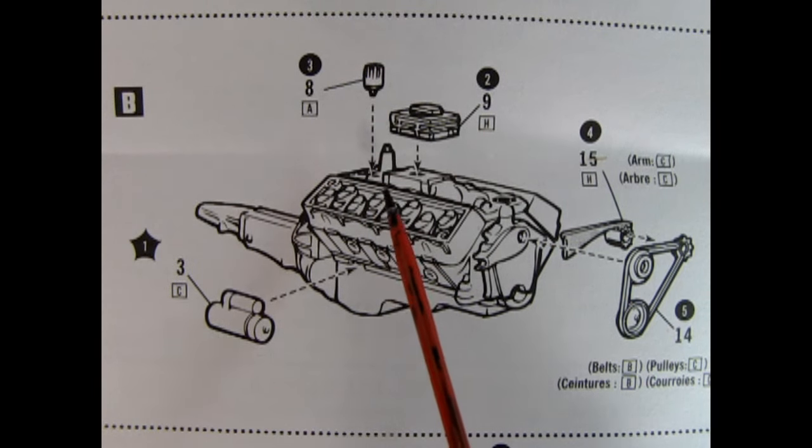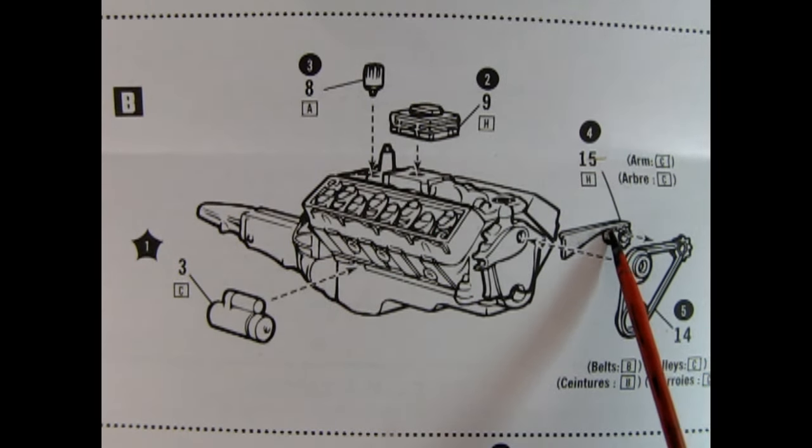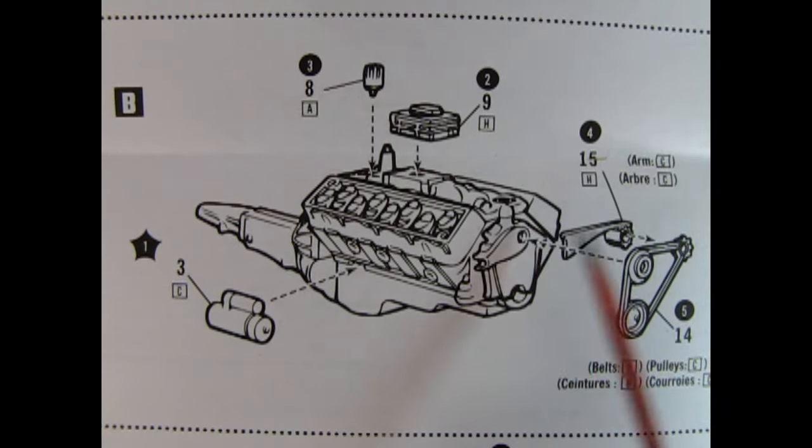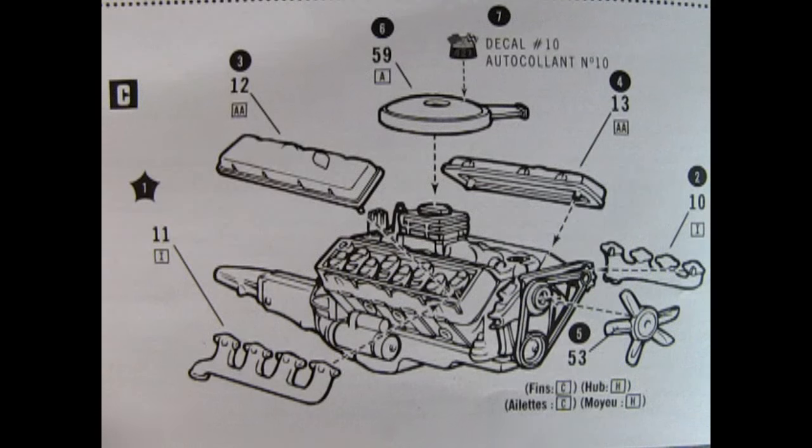Step B shows our distributor being installed beside the coil, the carburetor being glued onto the top of the intake manifold, the alternator with the bracket being glued on the side of the water pump, as well as the belts and pulleys and the starter motor. Step C completes our engine with our valve covers getting glued in place on the cylinder heads, the exhaust manifolds also being glued to the lower side of the cylinder heads, our fan going into the top pulley, our air cleaner going into the carburetor and the decal being installed on top of the air cleaner.